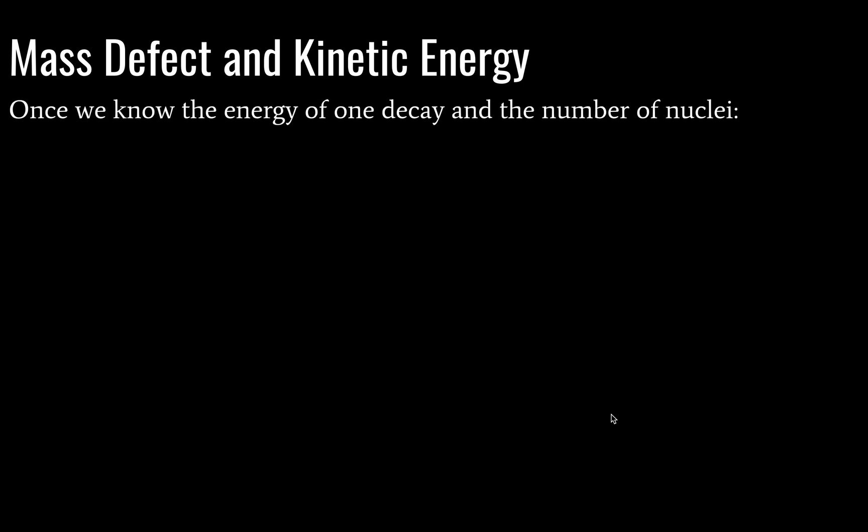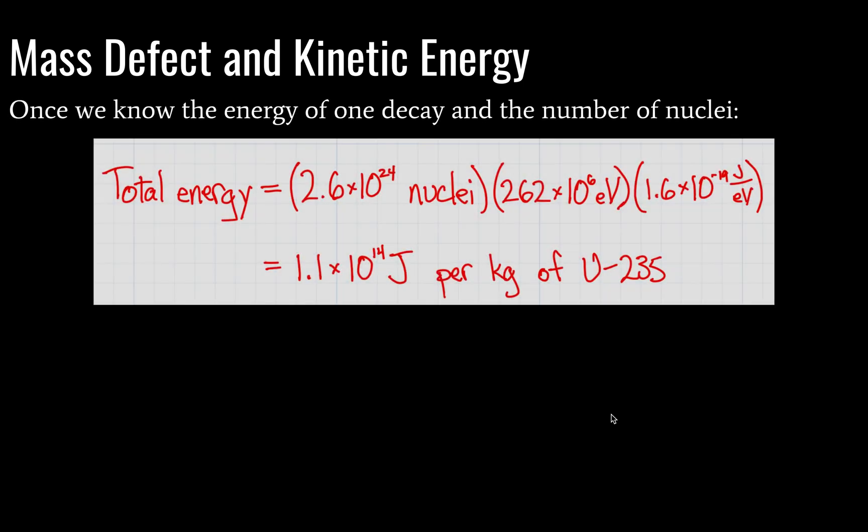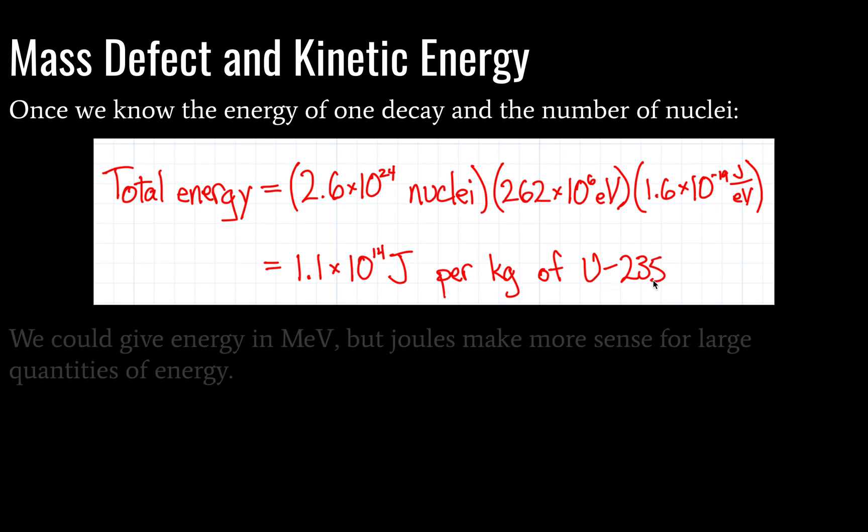Once we know the energy of one decay and the number of nuclei, then now we can find the total energy of the reaction. And so, we multiply the number of nuclei by the amount of energy per radioactive decay or fission, in this case. And then, if we want to convert it to joules, and we probably do, then we use this conversion factor. Now, what we're going to find is that we have about 1.1 times 10 to the 14 joules per kilogram of uranium-235.